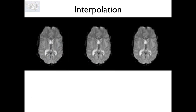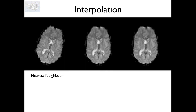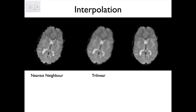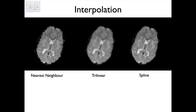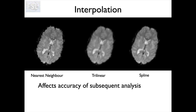To give a visual idea, here are three images - all the same image rotated by the same amount but with different interpolation functions. With nearest neighbor, the edges become blocky and don't look as clean. With trilinear, the edges are much smoother but a lot of the internal detail is also smoothed compared to before rotation. With spline, you actually keep a bit more of the detail, and it's a bit less smooth than trilinear.